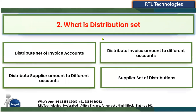Next question: What is a distribution set? We know that distribution set is one of the important things in Account Payables setups. The options are: distribute a set of invoice accounts; distribute invoice amount to different accounts; distribute your supplier amount to different accounts; or a set of suppliers in the distributions. Generally we create the distribution set at the time of doing the setups and assign it directly to the business unit. The correct answer is: distribute invoice amount to different accounts — the second option is right.